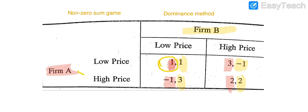Second option: if Firm A plays the high price strategy and Firm B also plays the low price strategy, the outcome is minus one — meaning Firm A will have to lose 1 million dollars. But if Firm B adopts the high price strategy, Firm A will earn 2 million dollars. So in the high price case, if Firm B adopts low price, Firm A has a loss of 1 million; if Firm B adopts high price, Firm A has a profit of 2 million.